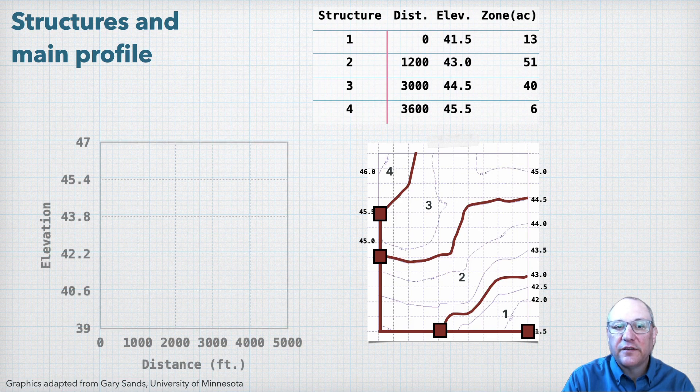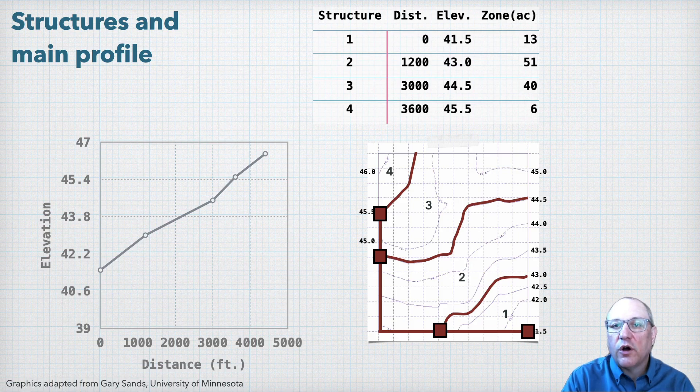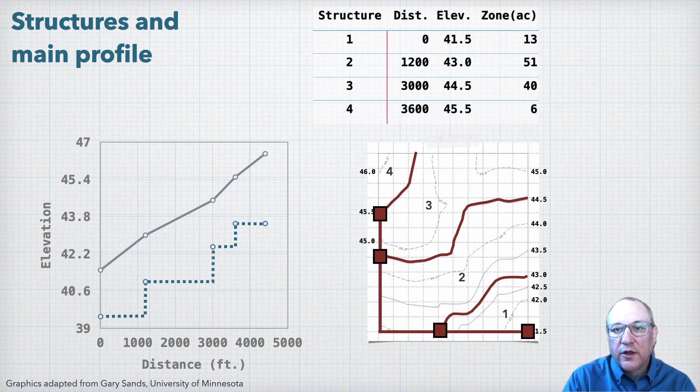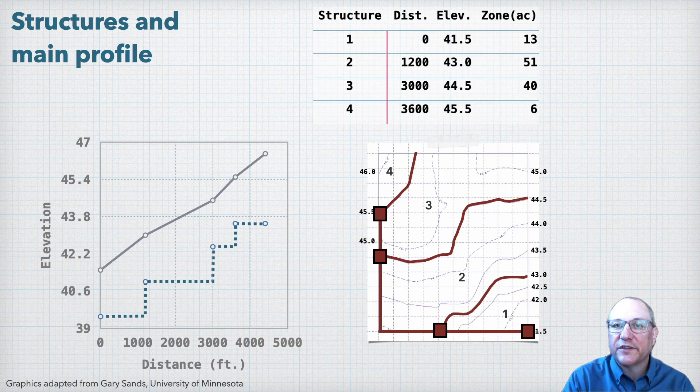If we plot the profile then, here's our surface profile starting at 41.5 feet, and then up to about 46.5 feet. If our target water table depth is two feet below the soil surface, here's what that profile will look like in each management zone. So as we've discussed before, we're at our target depth at the control structure location, and then we get further off as we move up in elevation until our next control structure reset.